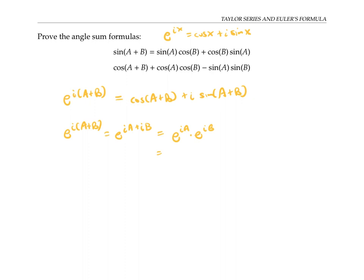If I now apply Euler's formula twice, once to e to the ia and once to e to the ib, I get a product of cosine a plus i sine a and cosine b plus i sine b. So I have, on the one hand, e to the i times (a plus b) is equal to this expression. On the other hand, it's equal to that expression.